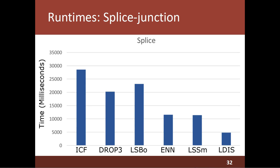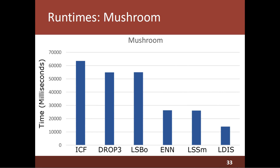This chart represents the results for the Splice Junction Gene Sequences dataset, and again LDIS algorithm has the lowest runtime among the considered algorithms. Finally, this chart represents the results for the Mushroom dataset. In this case, again, LDIS has the lowest runtime among the considered algorithms.